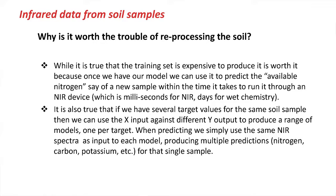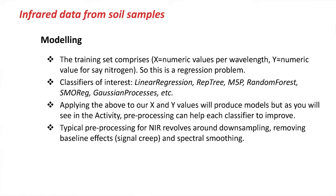It's very fast. The second advantage is that for the same input, if we've got enough models, we can produce estimates for a number of soil properties — not just one. If wet chemistry has determined potassium, available nitrogen, organic carbon, and organic nitrogen, we can build models for each and produce predictions for all those soil properties from the same X value, telling the farmer the values for each in milliseconds. That's the value of this approach.